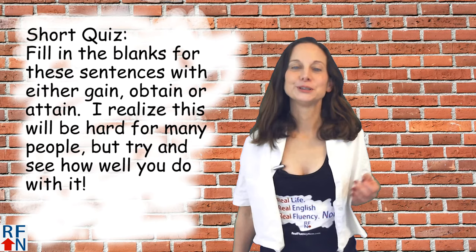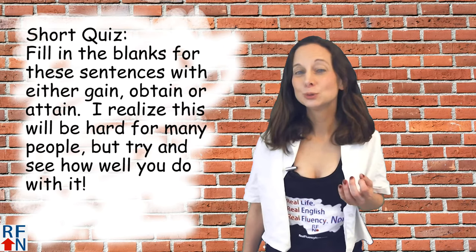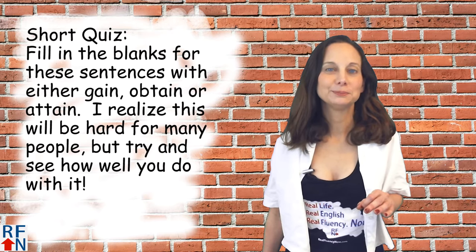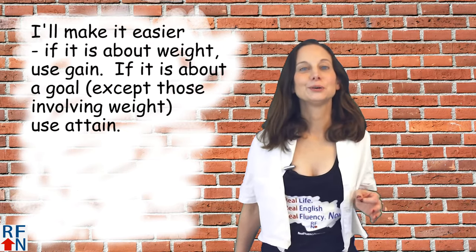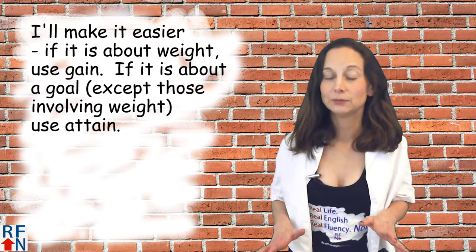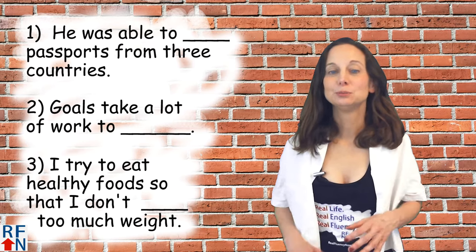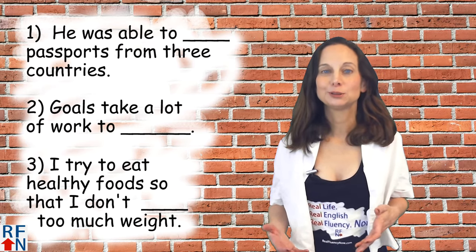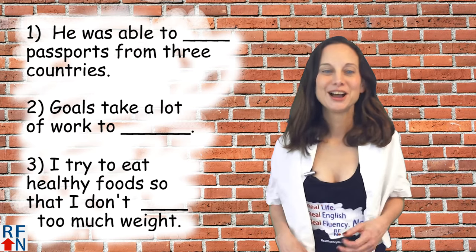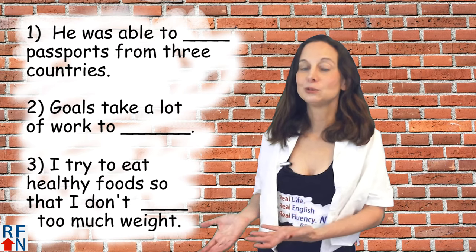Okay, it's time for the short quiz. Fill in the blanks for these sentences with either gain, obtain, or attain. I made it easier: if it's about weight, use gain; if it's about a goal, except for one involving weight, then use attain. Number one: he was able to blank passports from three countries. Number two: goals take a lot of work to blank. Number three: I try to eat healthy foods so that I don't blank too much weight.